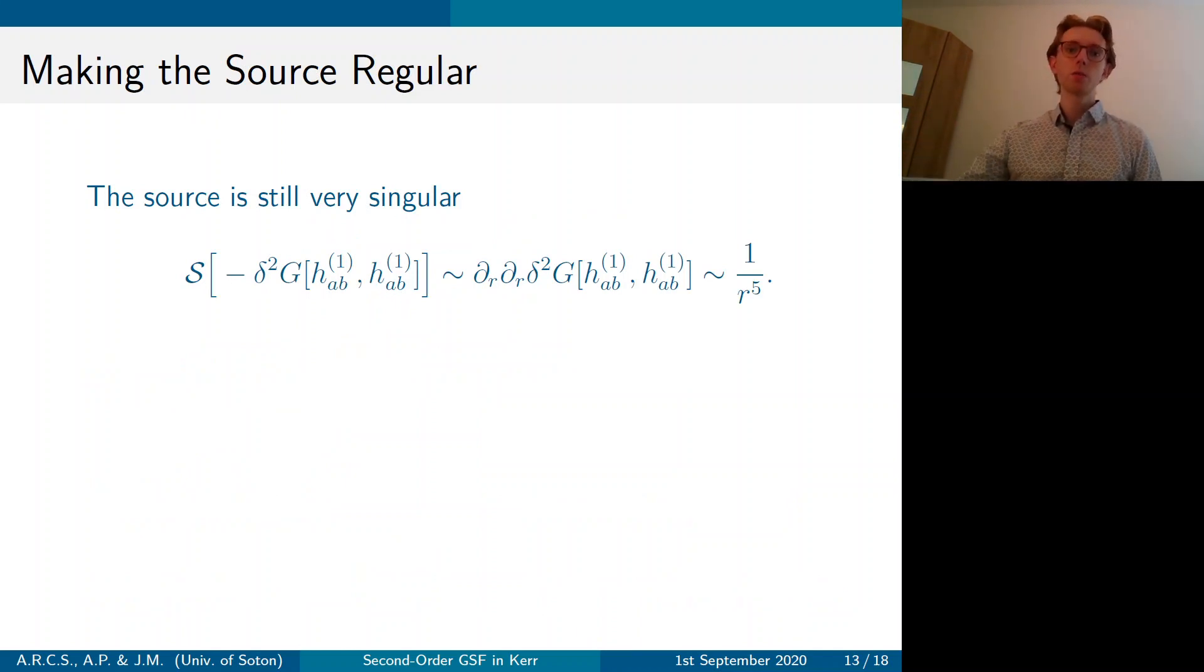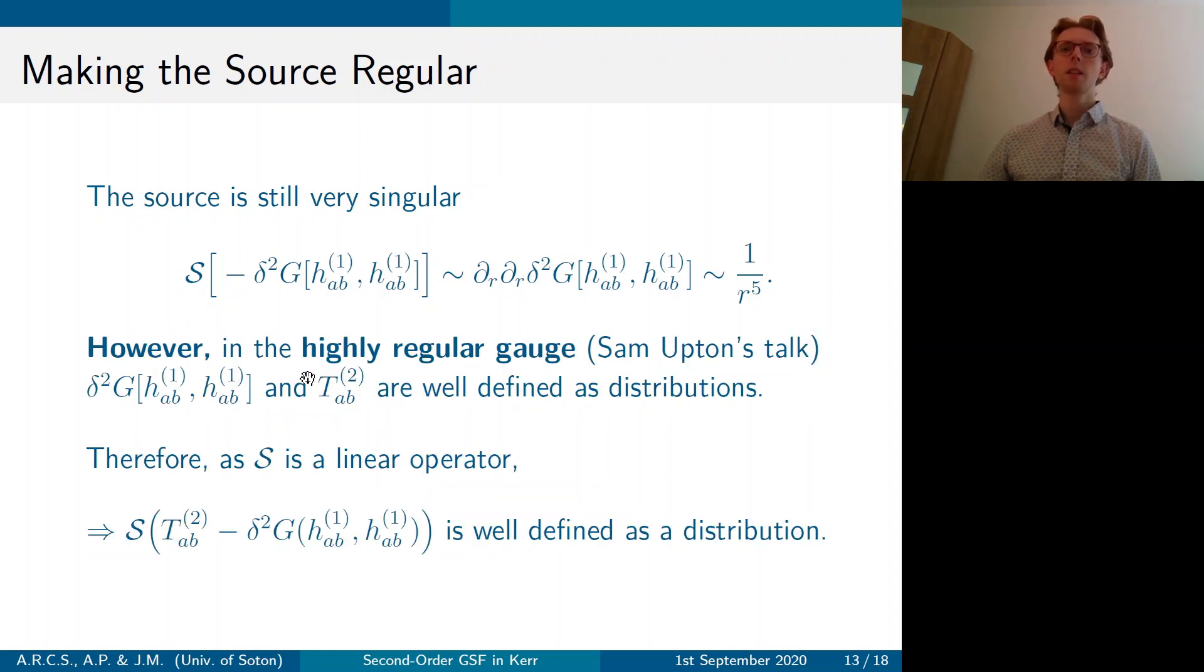So we have a new second order Teukolsky equation, but is its source regular? So you'll see here that the source is still highly singular near the world line. However, we can use the fact that in a highly regular gauge, D2g and the second order stress energy tensor are well defined as distributions. Therefore, as S is a linear operator, we can use distribution theory to tell us that S acting on these quantities gives you a well defined distribution, which means we believe the equation is integrable.